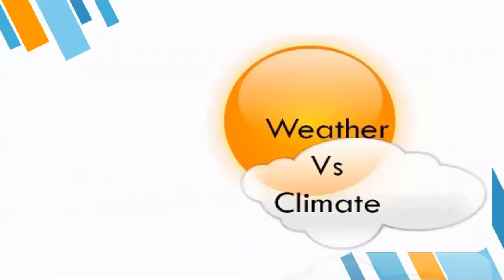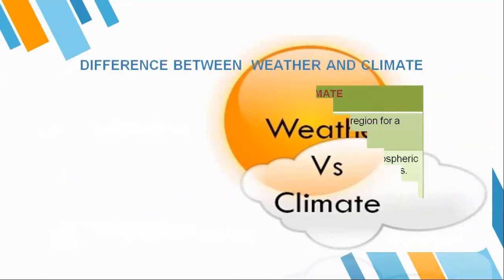Now, difference between weather and climate — weather versus climate. Weather: first point, it keeps changing like we already have discussed. Weather is something which is not static, so it keeps on changing every day, time to time, place to place. Climate: it prevails over a very large region — not only your area but a country as a whole or a continent as a whole. That is known as your climate.